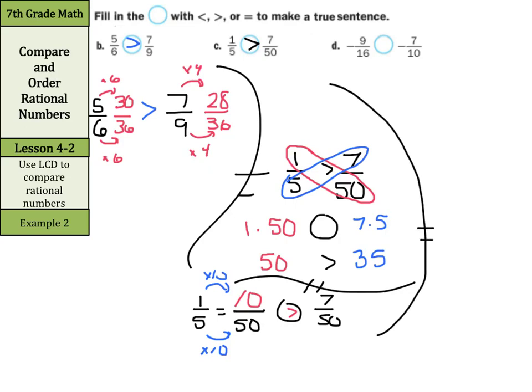Where it gets fun is with negative fractions. If we have negative 9 sixteenths, and we want to compare that to negative 7 tenths, notice how I attach the negative to the numerators. When I go to use the butterfly method with this, negative 9 times 10 is negative 90. And if I compare that to negative 7 times 16, negative 112. When I go to compare these two numbers, negative 90 is greater than negative 112. So negative 9 sixteenths is greater than negative 7 tenths.